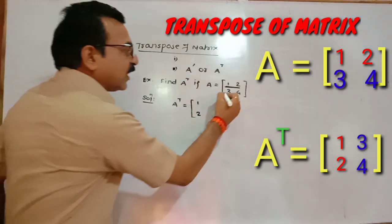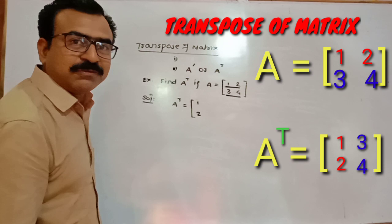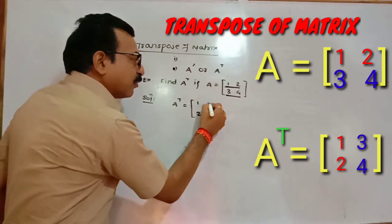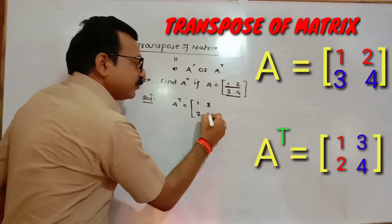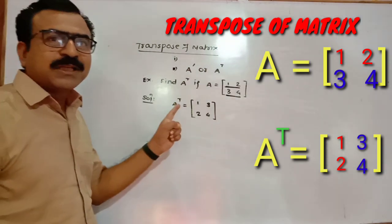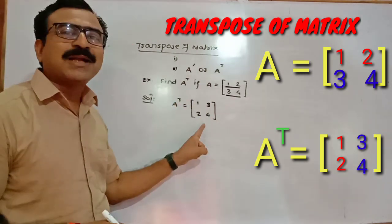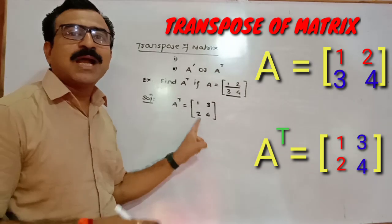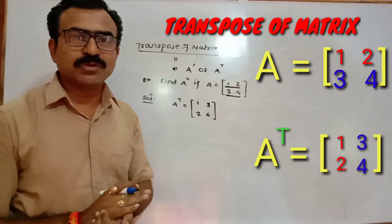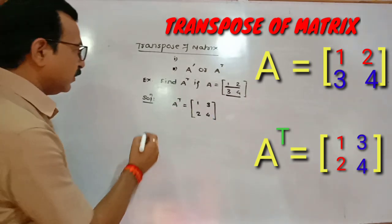In the second row, elements 3 and 4 are given, so convert them into the second column. After converting rows into columns, this new matrix is formed and this is called the transpose of the original matrix.